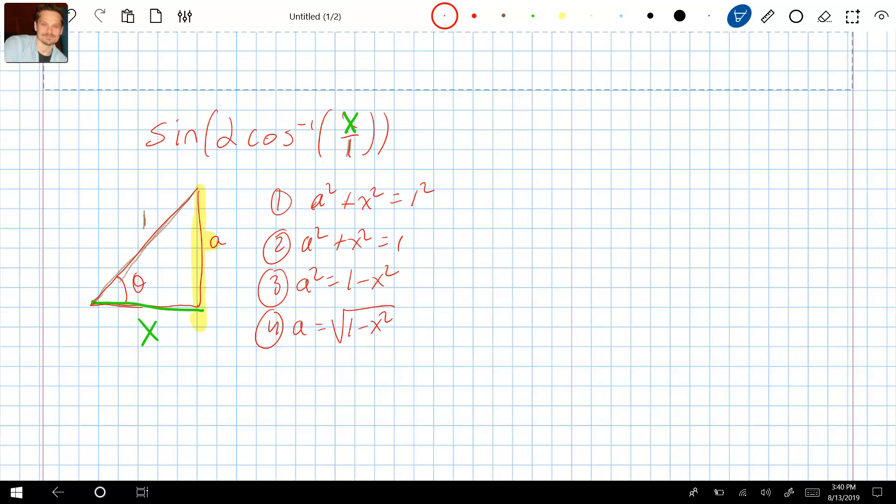So now I know that the yellow side is equal to the following. I can label it as square root of 1 minus x squared. So that's the yellow side. Once that is in place now I can actually simplify this expression.